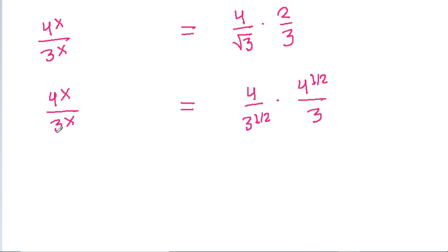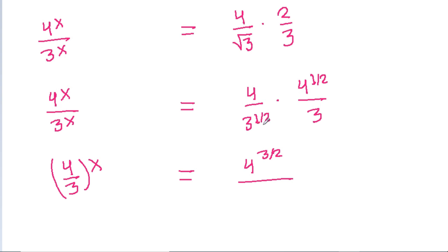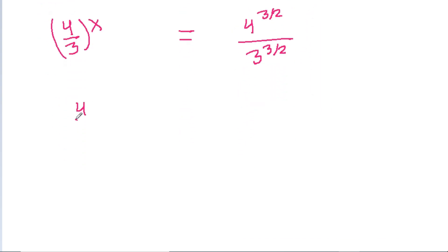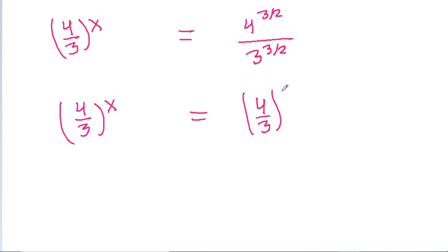So 4 power x is equal to 4 into 4 power (1/2), which is 4 power (3/2), divided by 3 power (1/2) into 3, which is 3 power (3/2). Therefore (4/3) power x equals (4/3) power (3/2), and we get x is equal to 3/2.